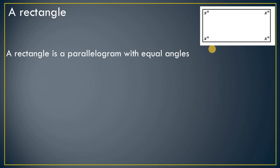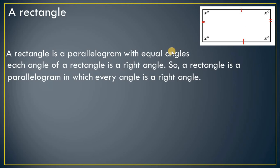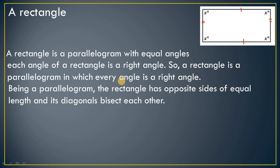A rectangle is a parallelogram because its opposite sides are equal — each side equals the opposite side. The opposite angles are also equal because in a rectangle all angles are 90 degrees, so all angles are the same. This satisfies the criteria of a parallelogram. Each angle of a rectangle is a right angle, so a rectangle is a parallelogram in which every angle is a right angle.